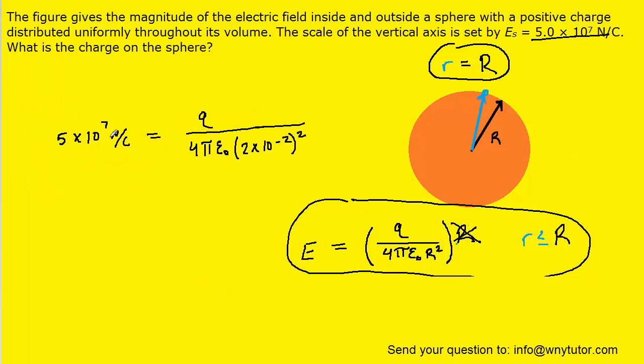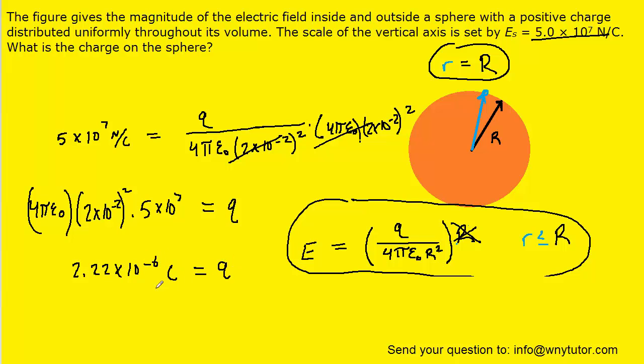We've gone ahead and filled in those known values, and then we'll solve for the amount of charge, or lowercase q, by multiplying both sides of this equation by 4πε times that radius squared. It will cancel out on the right hand side. And then when we punch this into our calculators, we should get approximately 2.22 times 10 to the minus 6th coulombs. And this becomes the correct answer for the amount of charge on the sphere.